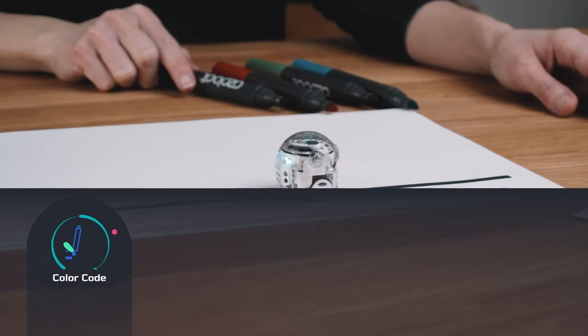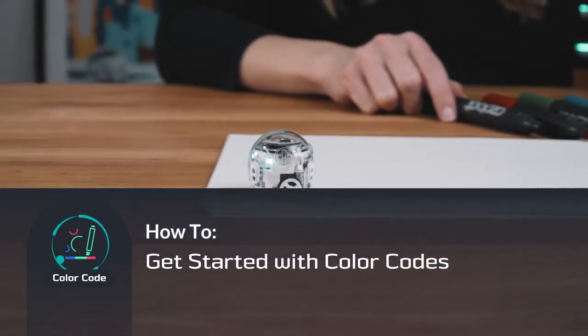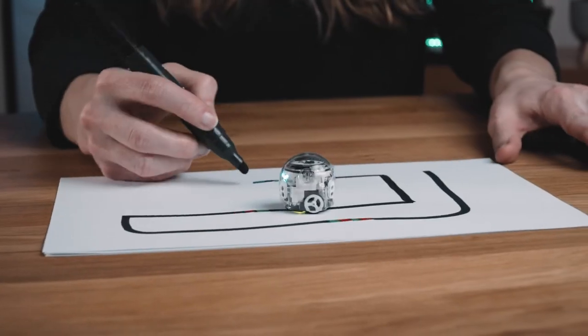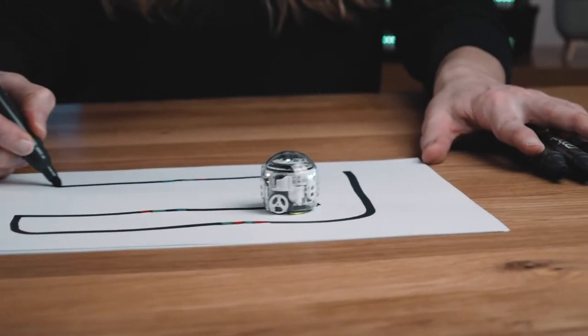Do you want to command your Ozobot EVO to go turbo speed? Spin like a tornado? Do a backwalk dance? It's easy with color codes.